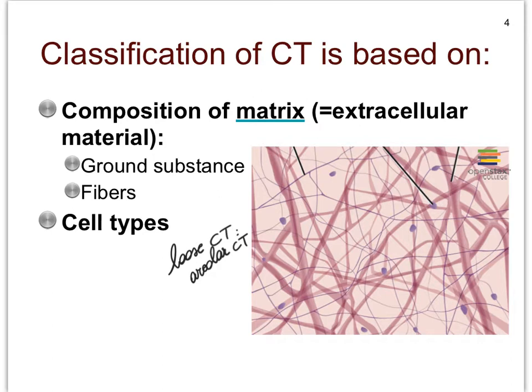Within that matrix, we see these lines, these pink bands and ribbons, and we also see thinner lines. Those are fibers. What those are, are just strings of proteins — strings of proteins that make these fibrous structures.